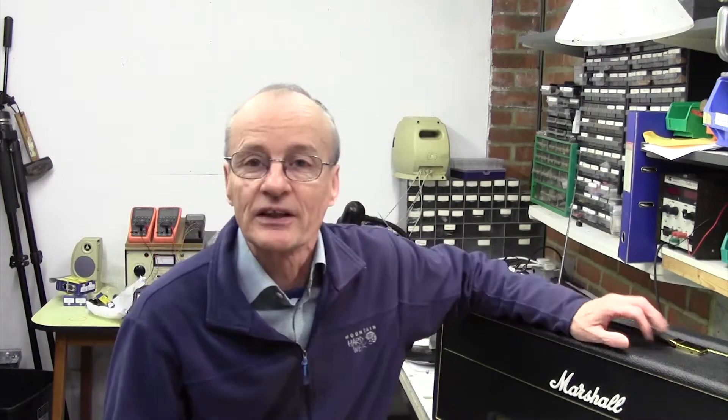On the bench today we've got a fantastic example of a Marshall JMP 100 watt Superlead. This is the reissue, but it's very faithful to the original and it's immaculate inside - a really beautiful amplifier. We're going to be showing you today how to bias this amp, so I'll whip the chassis out of the case and join you in a moment.